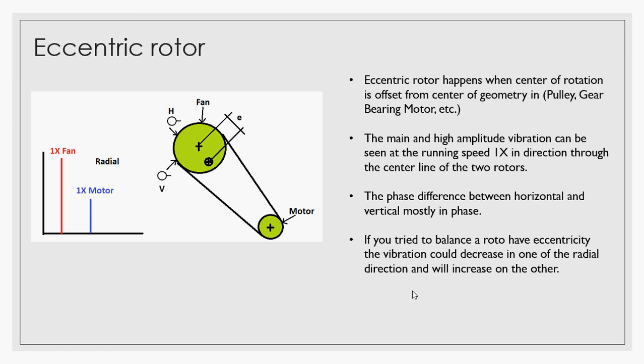When you're trying to do balancing for a fan which is belt driven and it has eccentricity, if you have any residual imbalance it will decrease, but if you still have eccentricity on the pulley or in the rotor, when you drop the vibration on one direction, for example horizontal, you will find it will increase in the vertical.